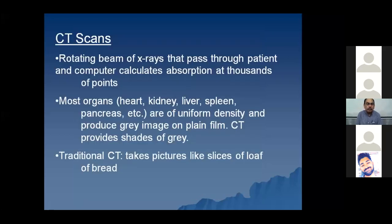Then comes another modality - the CT scan. CT scan also uses ionizing radiation, x-rays. The main advantage over plane films is that in CT scans, most of the organs we are imaging - whether the brain, the heart, the abdomen, or the chest - you can clearly differentiate one organ from the other. The images taken in CT scan are axial images.